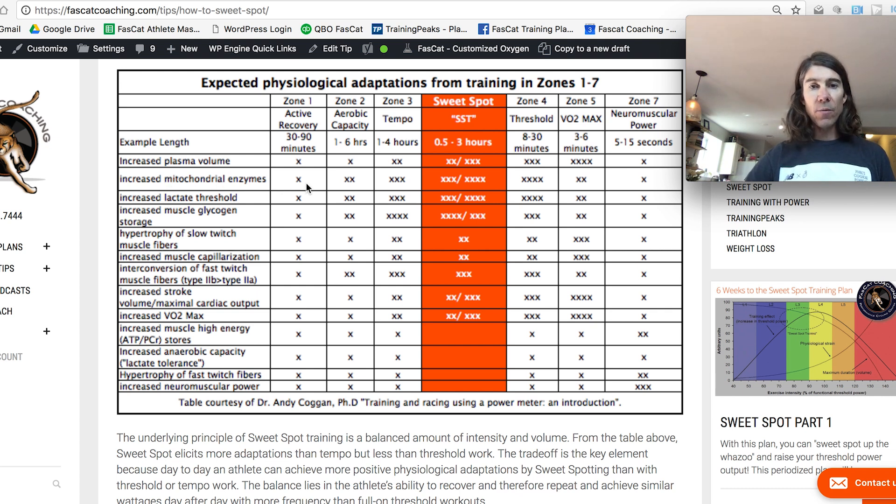And so what Andy has done, Dr. Andy Coggin gave me this table back when we were inventing the performance manager chart, developing it is probably a better word, but these X's represent the physiological adaptation that occurs for that particular physiological adaptation and the amount per zone.